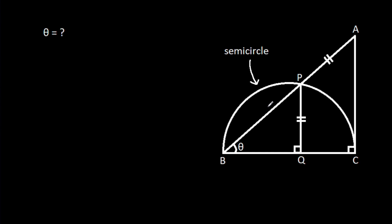In this video, we have been given a semicircle where AP is equal to PQ, angle PQB is 90 degrees, angle ACB is 90 degrees, and angle ABC is theta. We have to find theta.